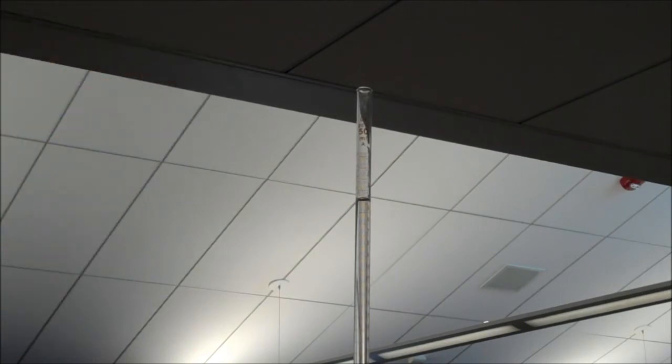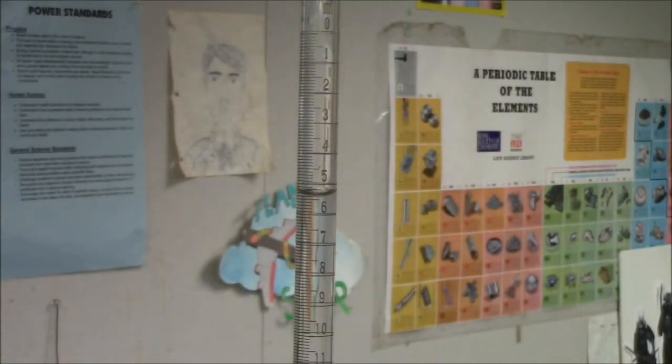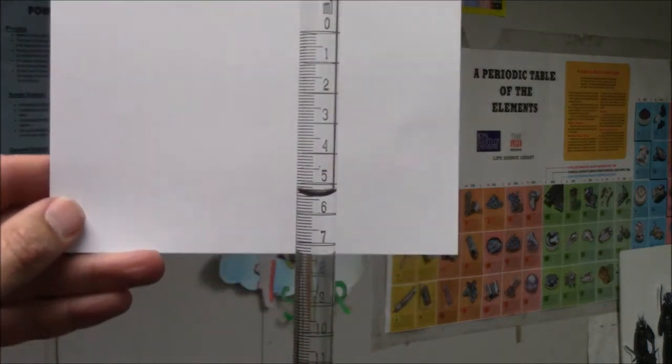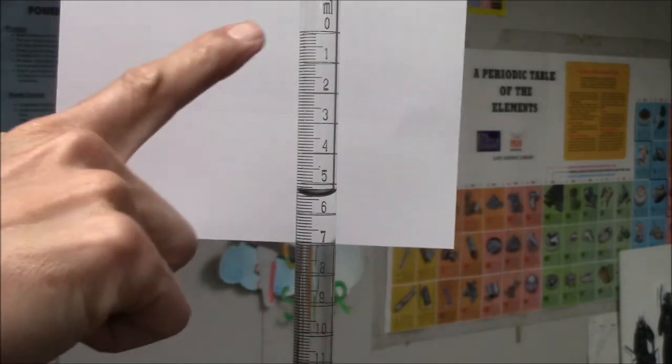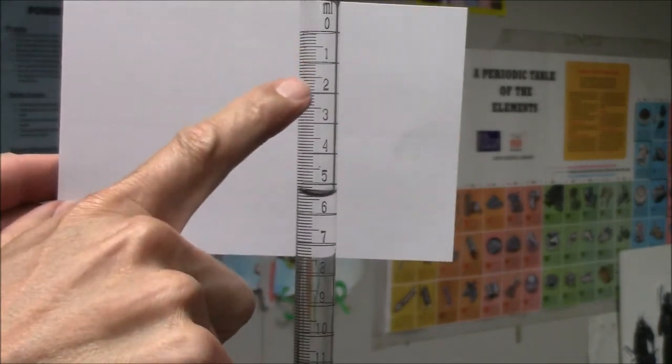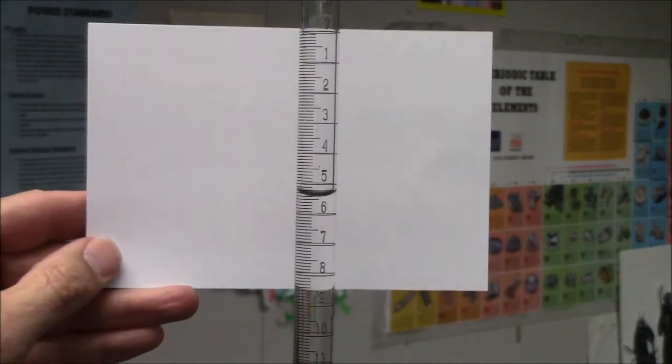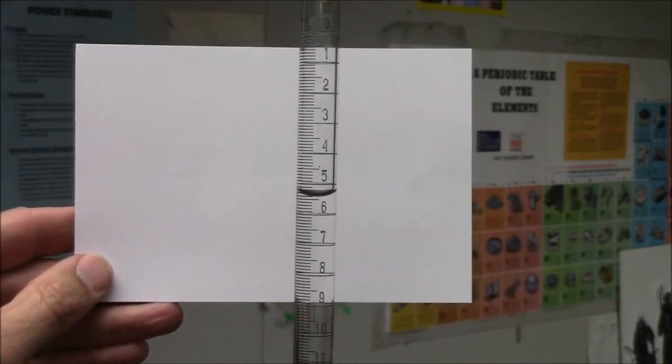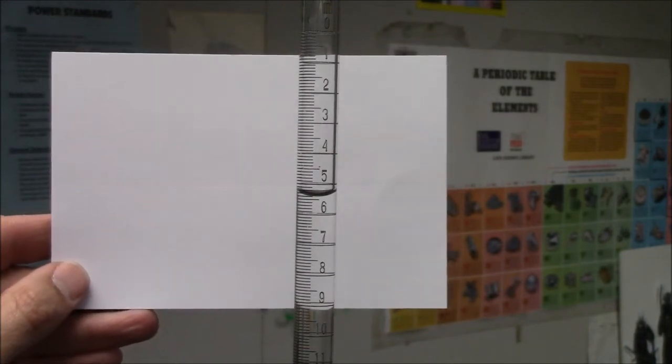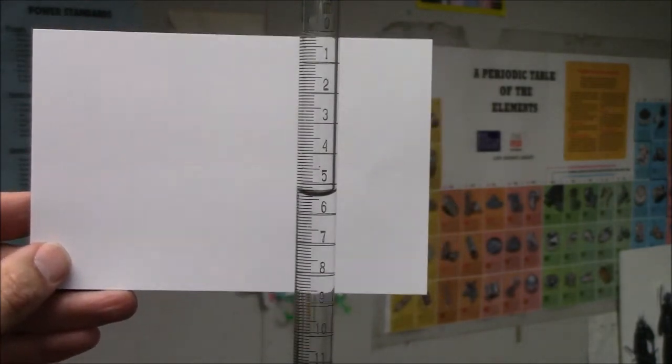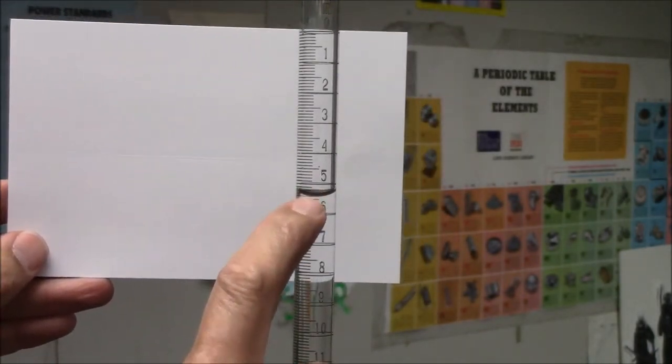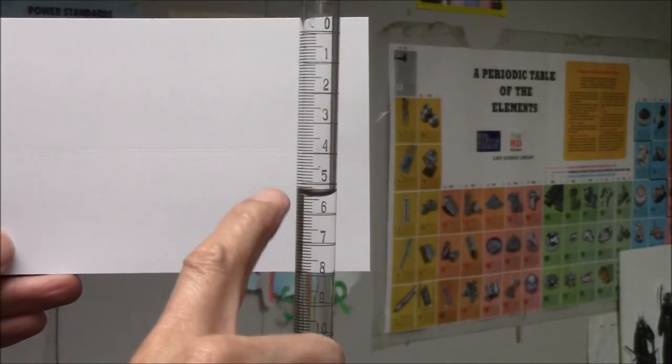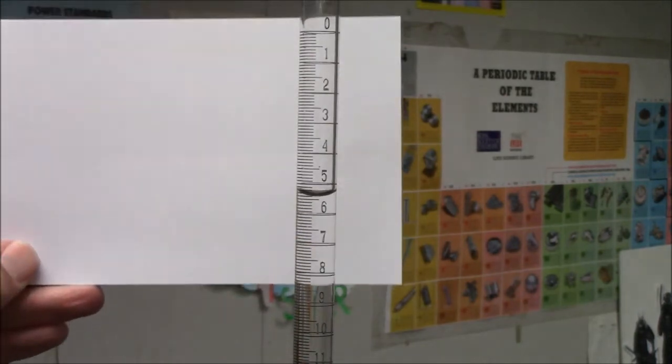Many students have trouble reading a burette because the numbers are backwards from what they expect. Zero is at the top. One, two, three, four, five. You do not need to know how much solution is in the burette. You only care how much comes out of the burette. So I read this as five point four milliliters. That's where we are right now. Bottom of the curve is at five point four milliliters.